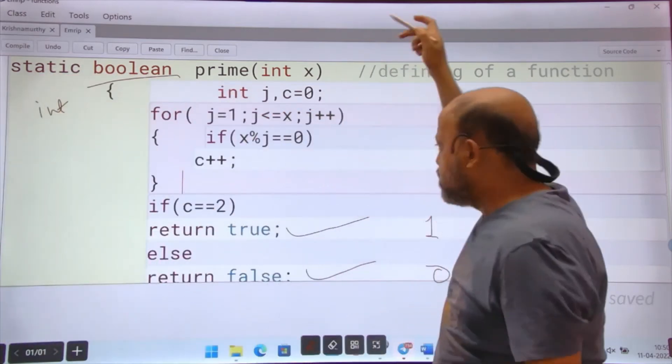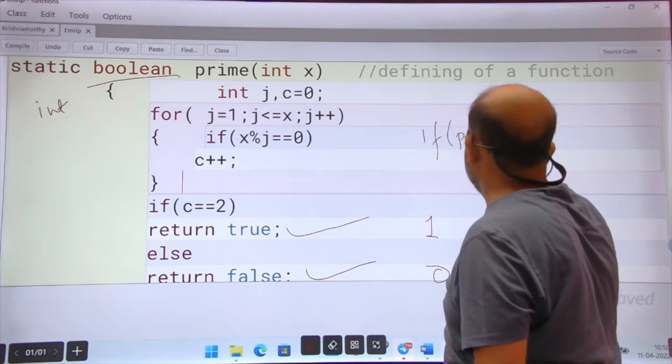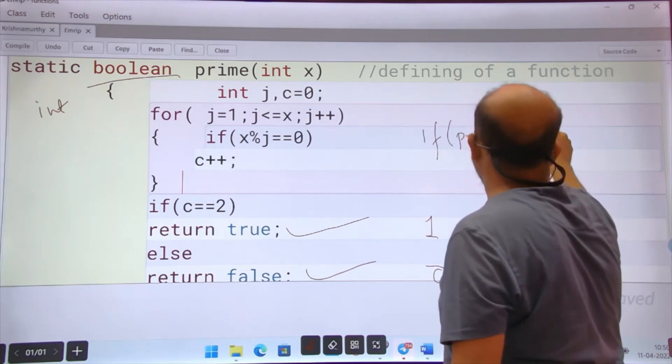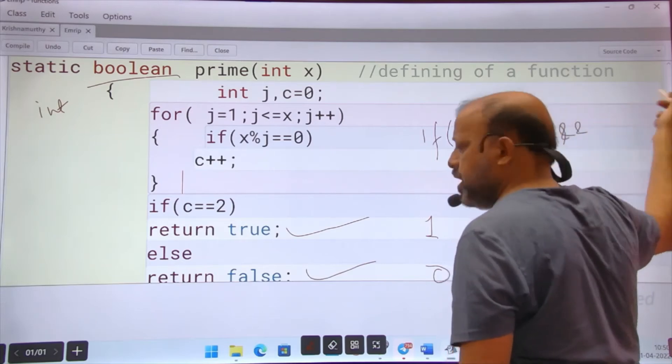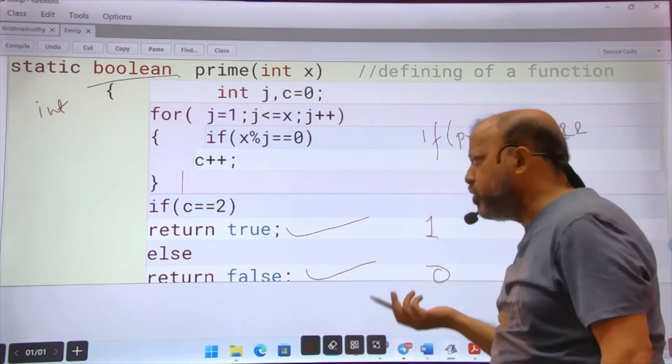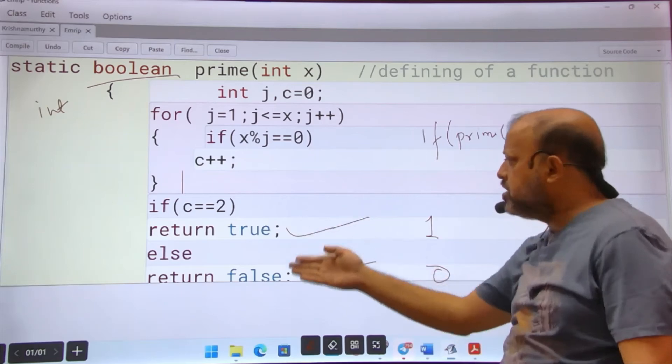And the checking where you are checking, you could have checked like this: if prime n equal to equal to 1 and prime nr equal to equal to 1. This is one way, but this is a very standard way.